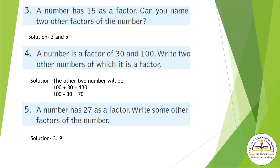A number is a factor of 30 and 11. Write 2 other numbers of which it is a factor. Here we have to find 2 factors, so we have to add and subtract both the numbers. When we add, we get 130, and when we subtract, we get 70. So these are the 2 factors. A number has 21 as a factor — the factors of 27 are 3 and 9. This is our answer.